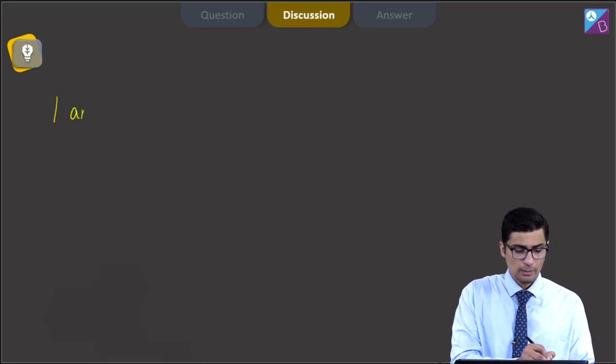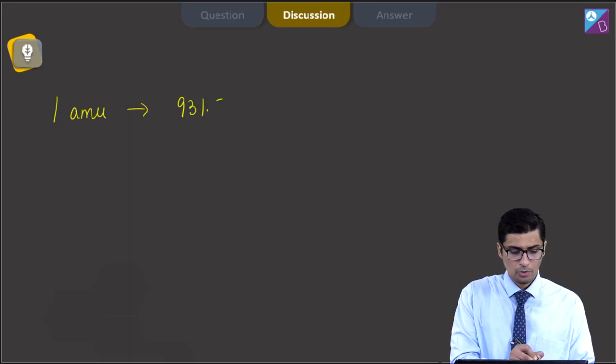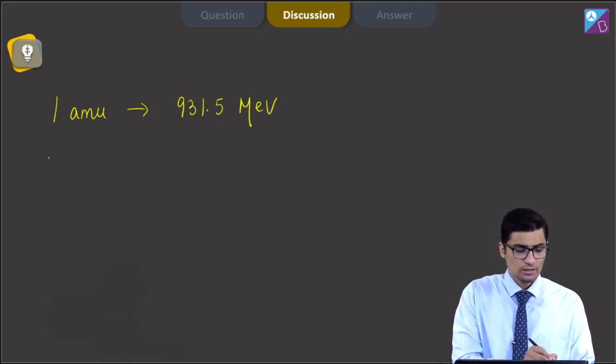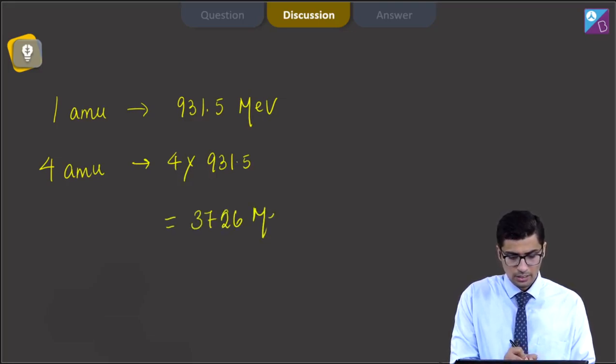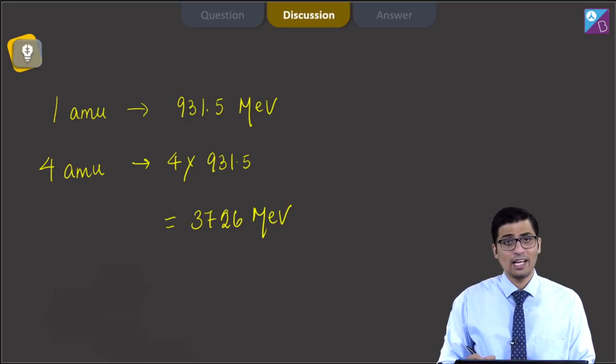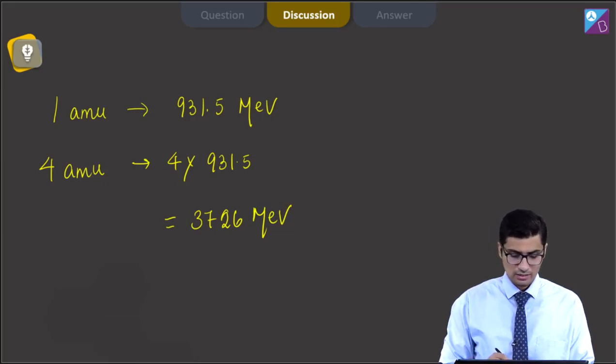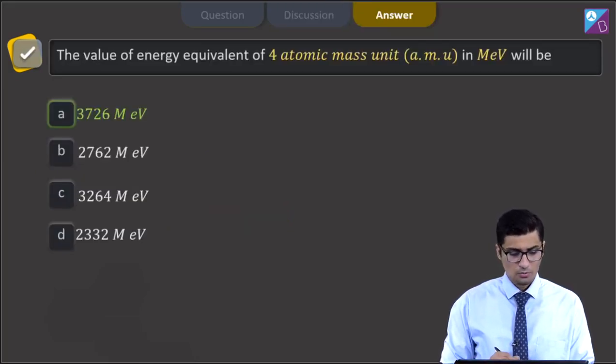Dear students, we know that 1 AMU is equivalent to 931.5 mega electron volts. Based on similar lines, 4 AMU will be equal to 4 into 931.5, that is 3726 mega electron volts. Hence, for this question, the correct answer is option A. Now let us move to the next question.